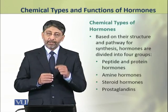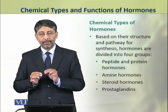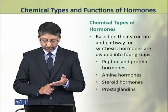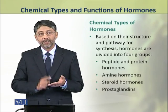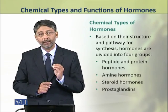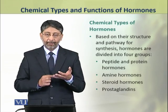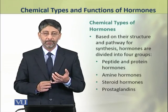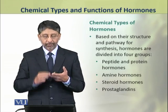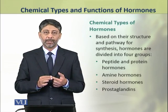Based on their chemical structure and pathway of synthesis, hormones are classified into four chemical types: number one, the peptide and protein hormones; number two, amine hormones; number three, steroid hormones; and number four, prostaglandins.